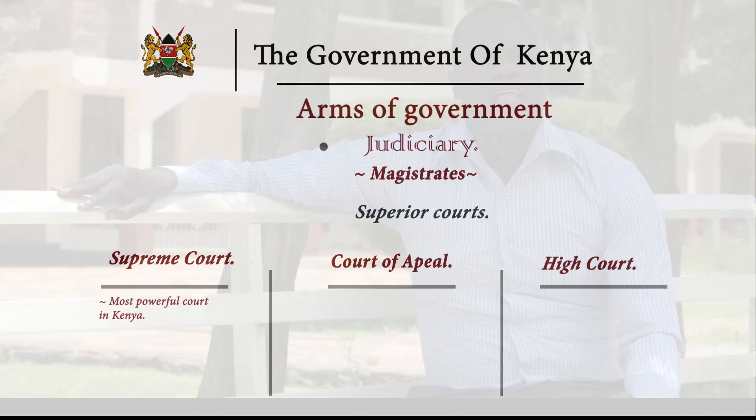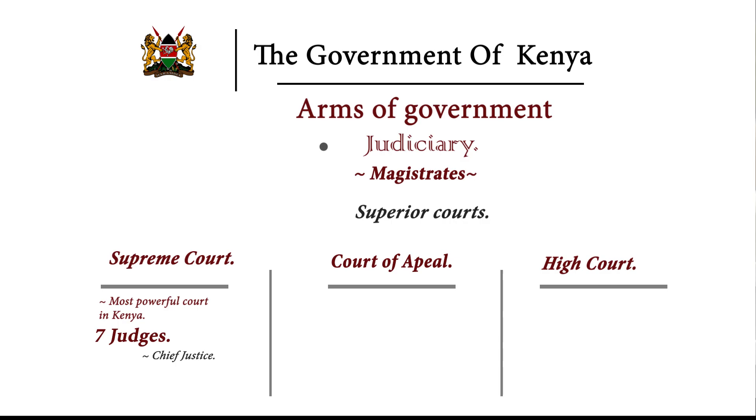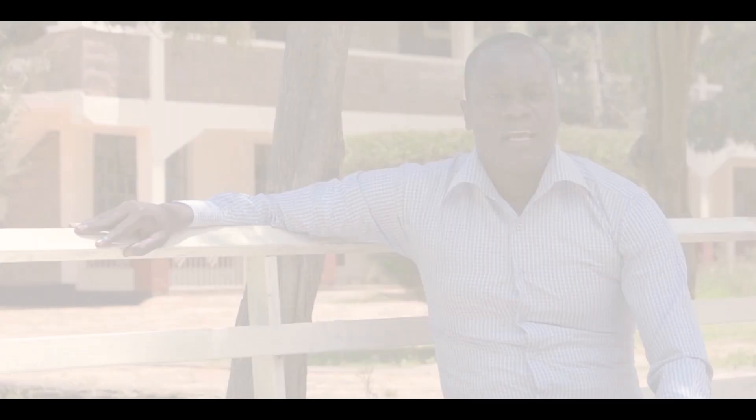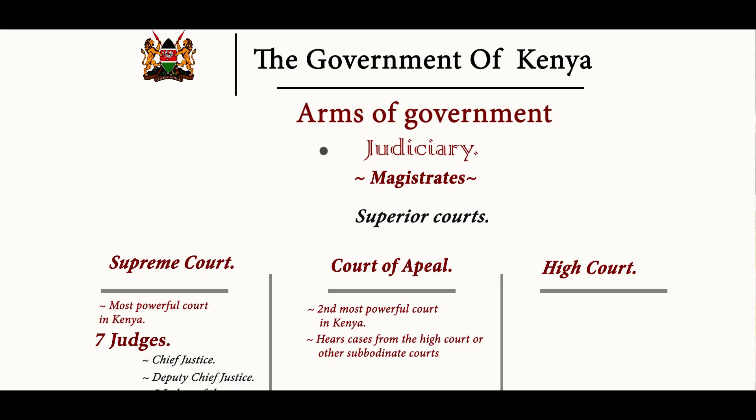The most powerful court in Kenya is the Supreme Court, made up of seven judges: the Chief Justice, Deputy Chief Justice, and five judges of the Supreme Court. It hears cases of high order. The second most powerful court is the Court of Appeal, which hears cases from the High Court or other subordinate courts — for example, when someone is not satisfied with a decision and appeals. The third most powerful court is the High Court, led by one judge elected by the other judges of that court.